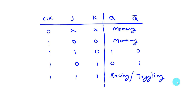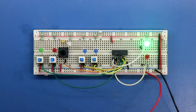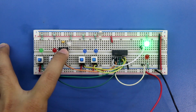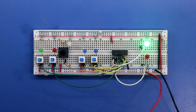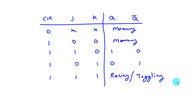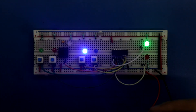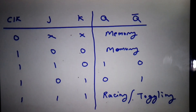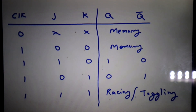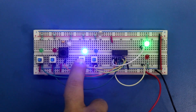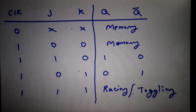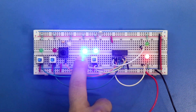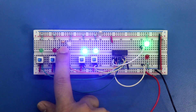Let's see the first two conditions — clock 0 and clock 1 with J and K both at 0 — in both conditions the output remains in the memory state, i.e., the previous state. Now clock is 0, so we are in the previous state. Providing the clock pulse still gives us the previous state because J and K are 0. Now for the third condition — J is 1, providing clock pulse — the output becomes Q. For the fourth condition — K is 1, providing clock pulse — the output becomes Q bar. For the fifth condition — both J and K are 1, providing clock pulse — the output toggles.